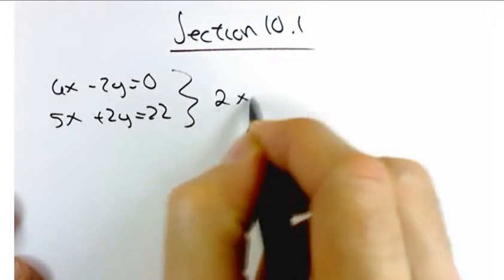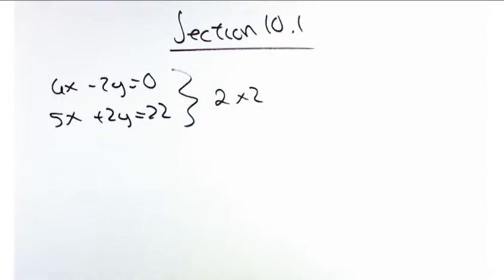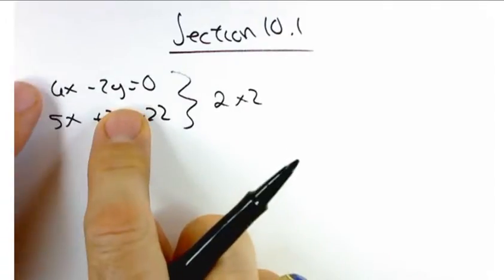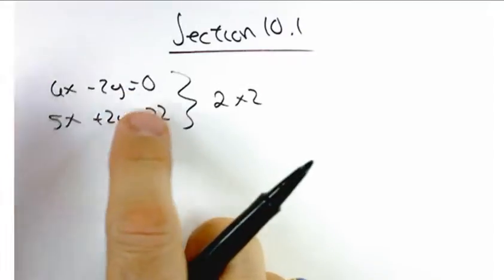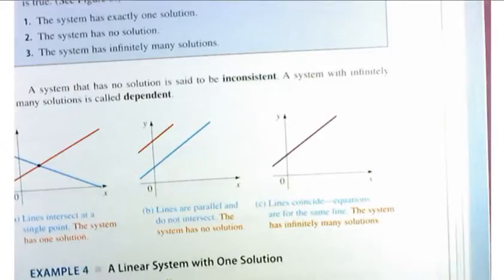It's called a 2 by 2 system because we have two equations and two unknowns. So if you're working with this, what could happen? What are the possibilities? First of all, let's understand what you're looking for geometrically. Geometrically, you're looking for the place where these two lines cross each other. You're not guaranteed that they're going to cross each other.